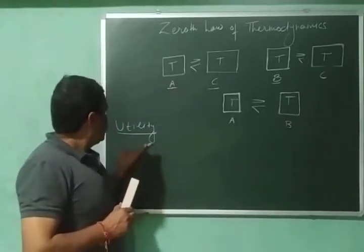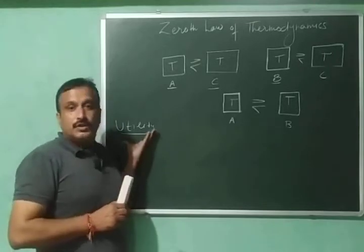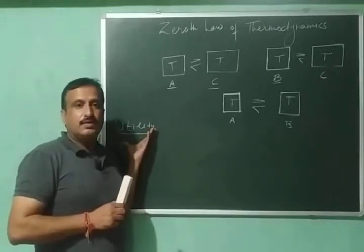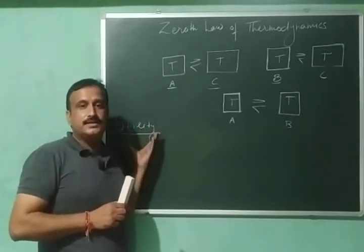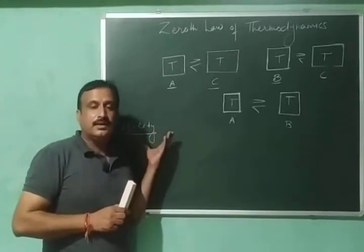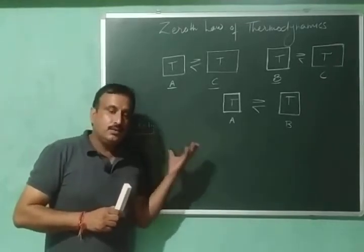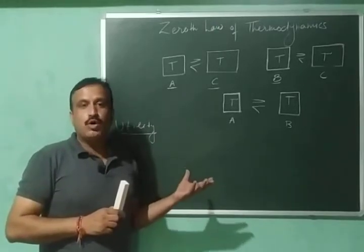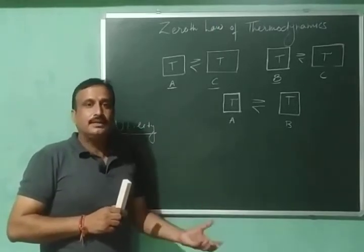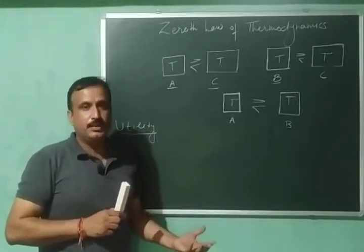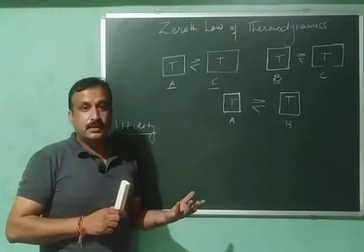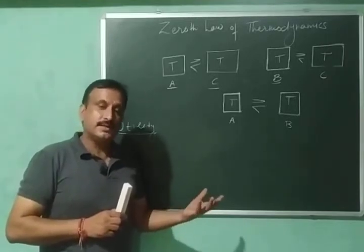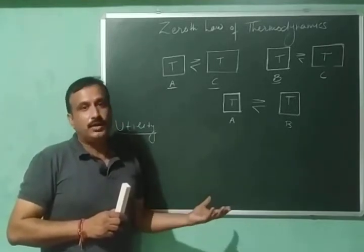What is the utility of this law? The utility lies in the fact that if we want to compare the temperature of two bodies with the help of a thermometer, then the thermometer can be considered as the third body.